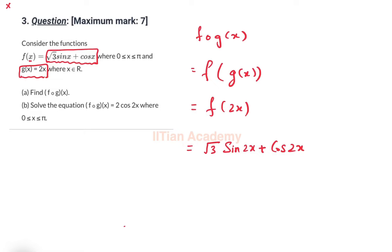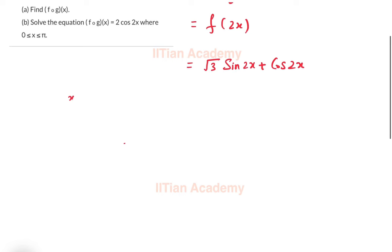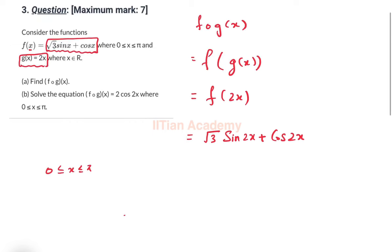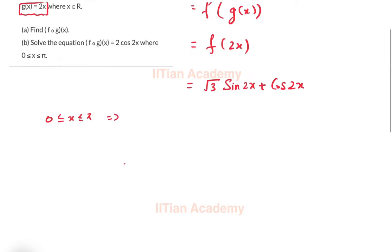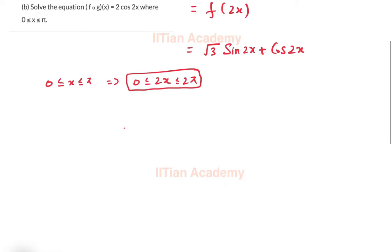And we have to be very careful that while x is ranging from 0 to π, 2x will range from 0 to 2π. So the range of 2x is from 0 to 2π.